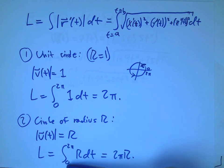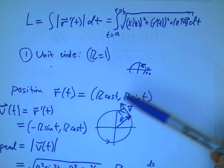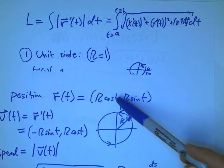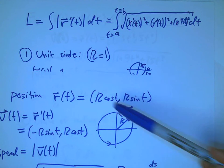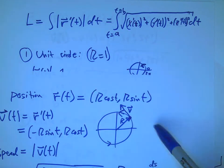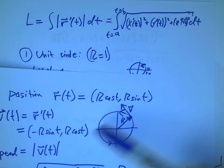And notice that these limits don't change. Even though the circle has gotten bigger, these limits don't change. Because the parameterization with r cosine t, r sine t, the t still runs from 0 to 2π.